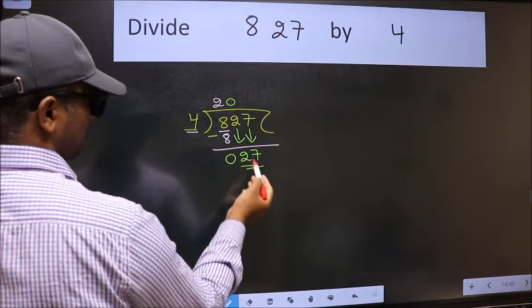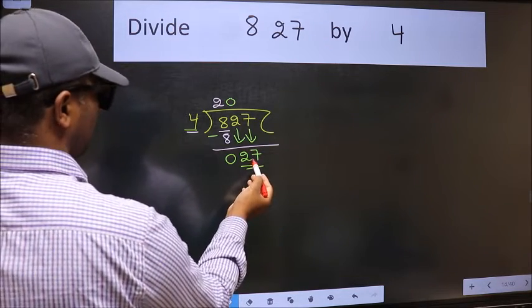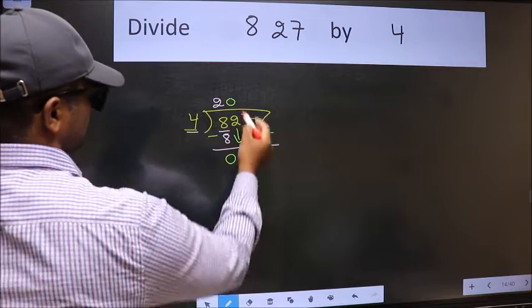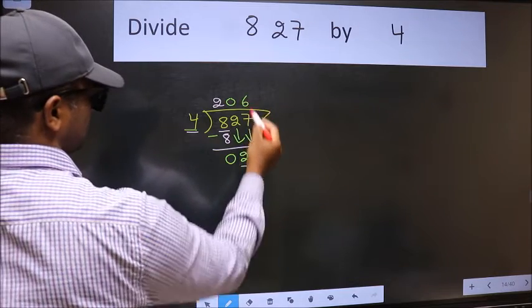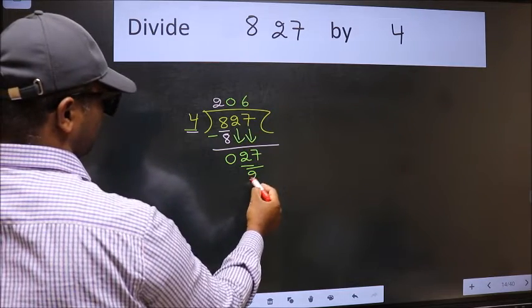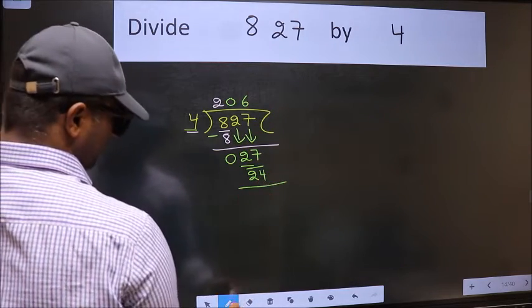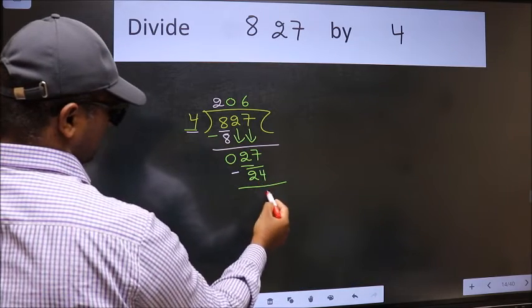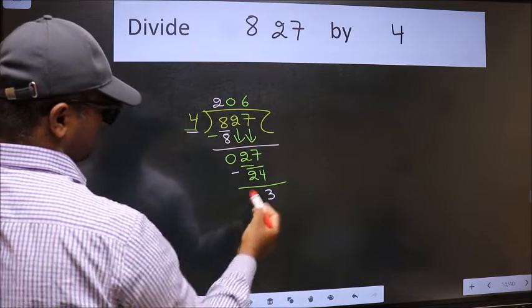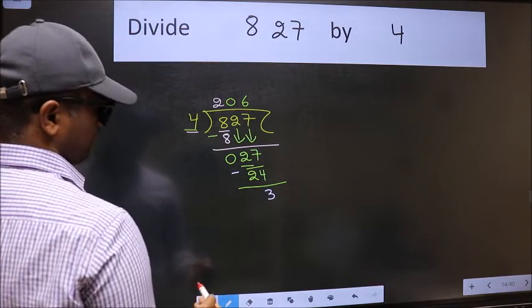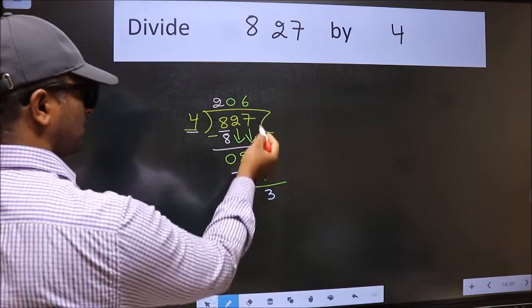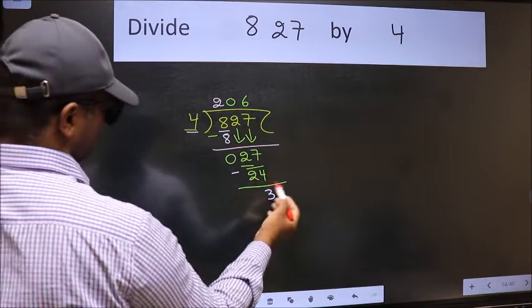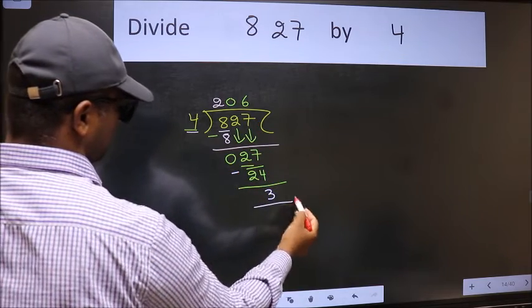Now 27. A number close to 27 in the 4 table is 4 times 6, which is 24. Now we should subtract. We get 3. No more numbers to bring down, so we stop here.